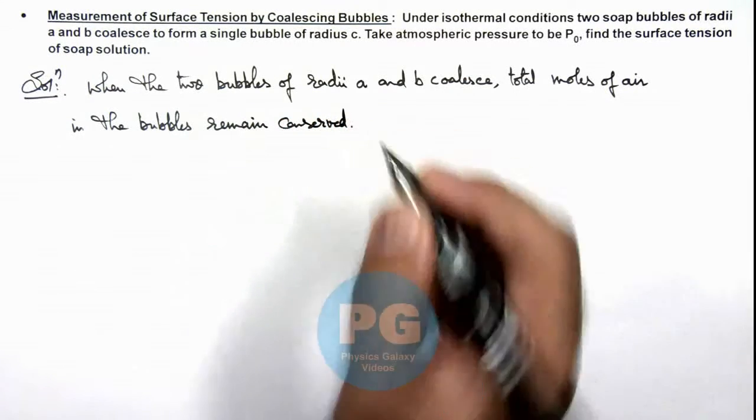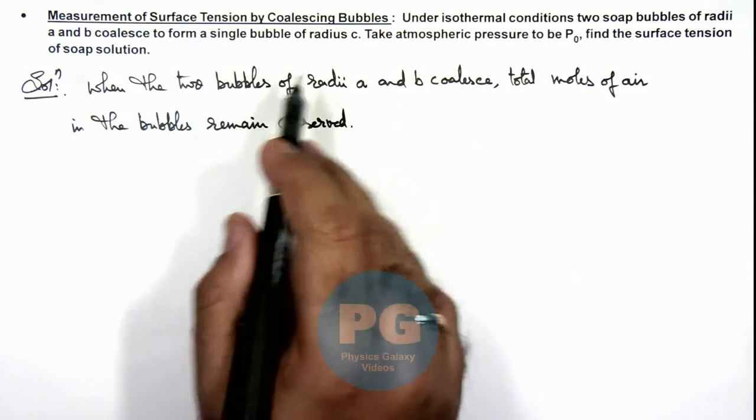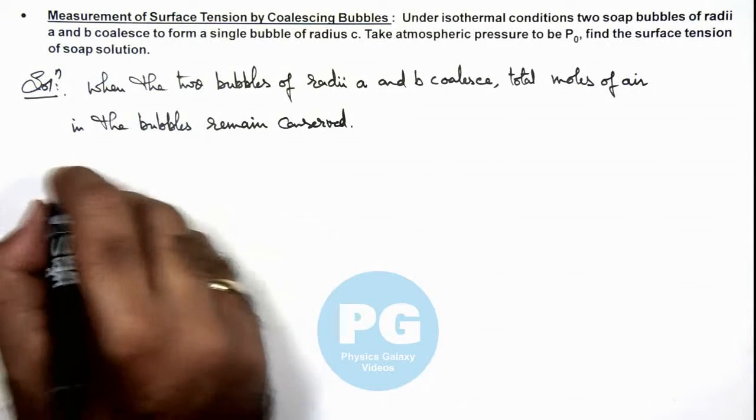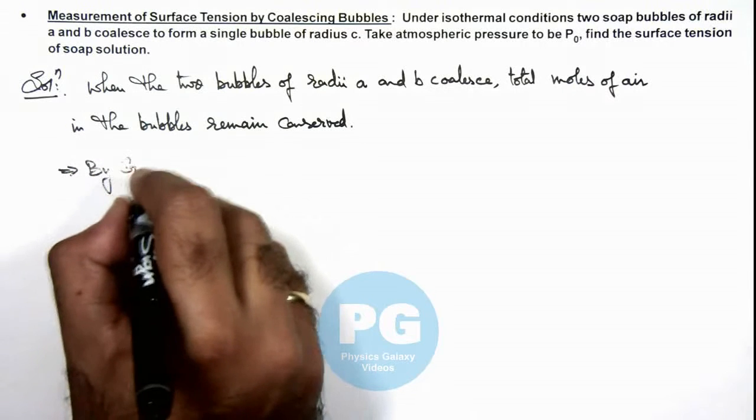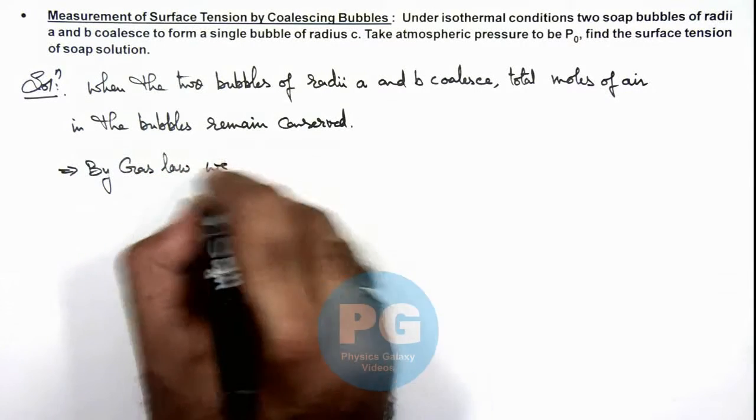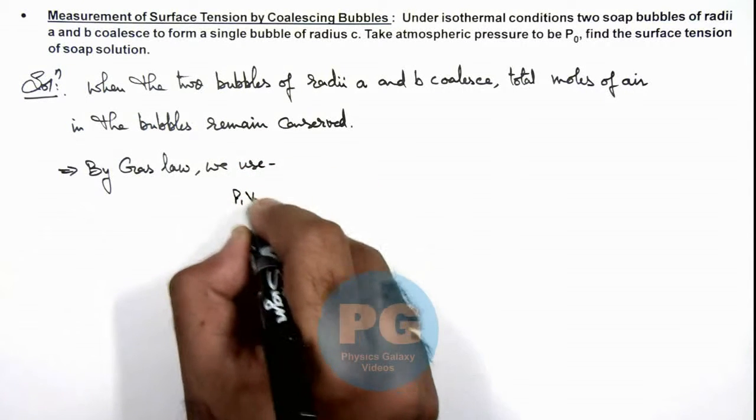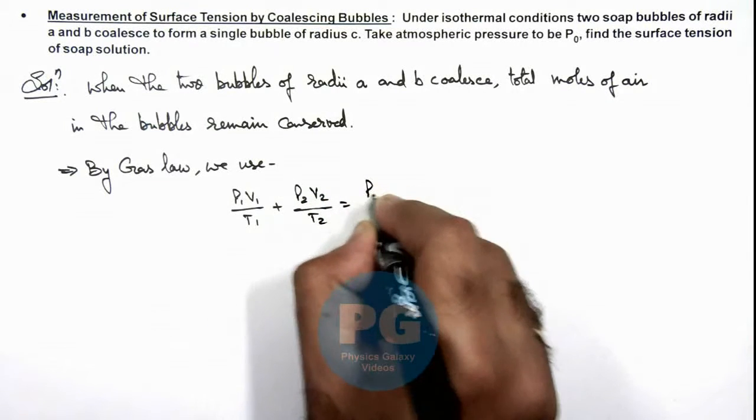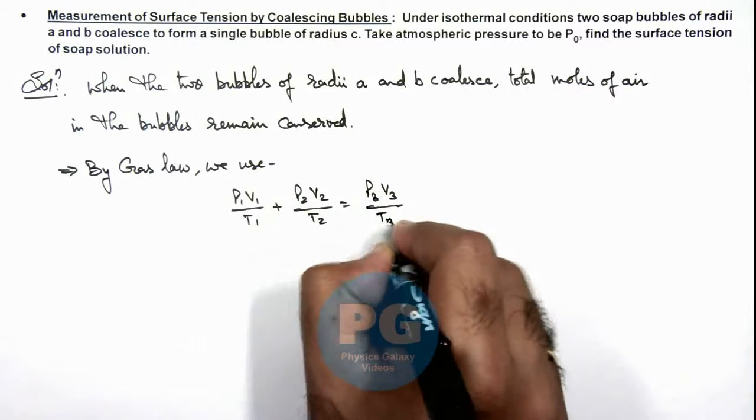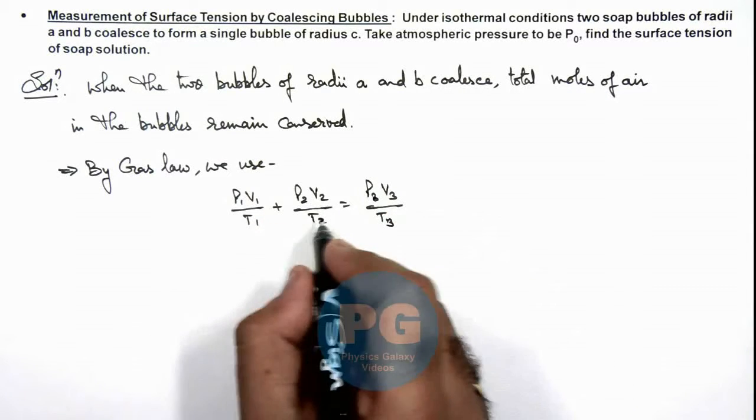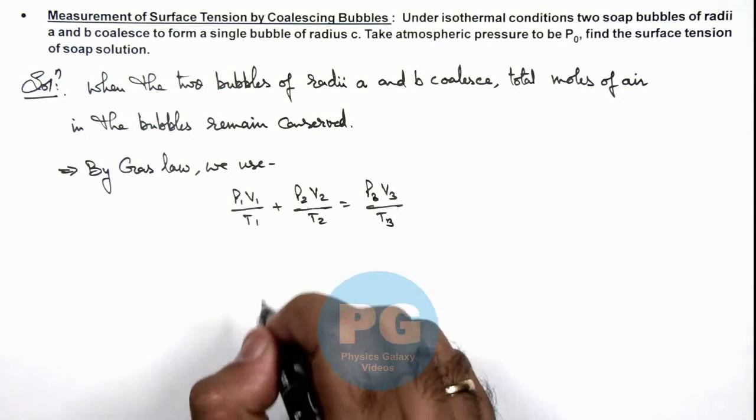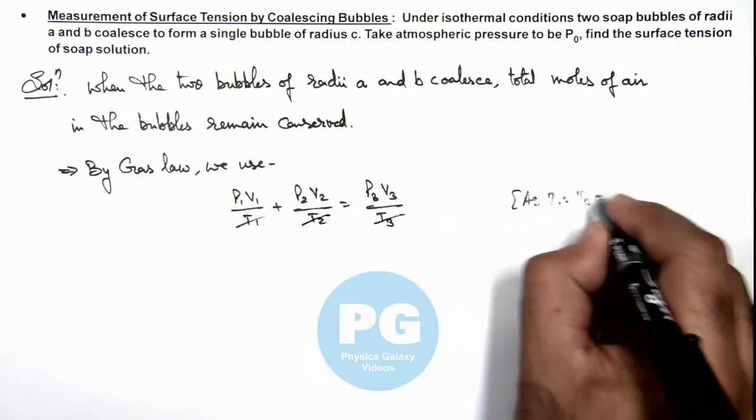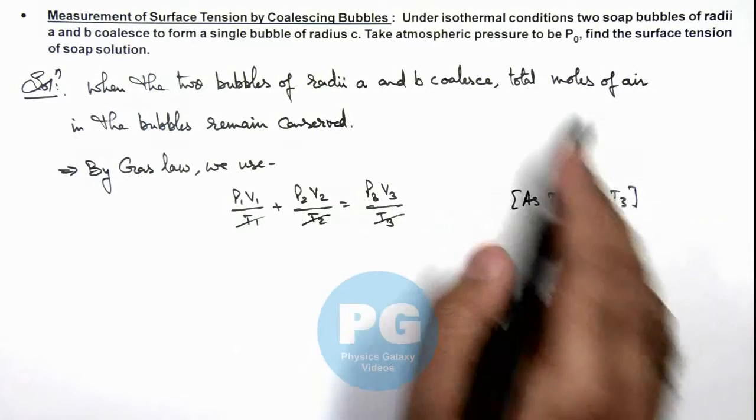As we are assuming the bubbles are coalescing to form a new bubble and the total amount of air remains constant, total moles of air remain conserved. This implies we can write by gas law: P₁V₁/T₁ + P₂V₂/T₂ = P₃V₃/T₃. This is for the first bubble, this is for the second bubble, and this is after coalescing the third bubble. Temperature we can cancel, as we are given T₁ = T₂ = T₃ under isothermal conditions.